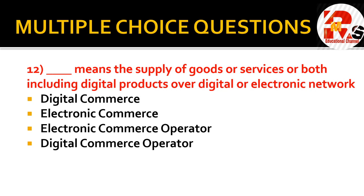Next question: blank means the supply of goods or services or both, including digital products over a digital or electronic network. The right answer for this question is electronic commerce — also called e-commerce. From the options themselves, it is clear that the answer is electronic commerce or e-commerce.